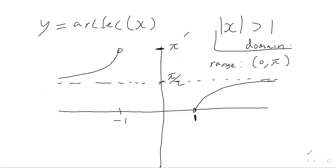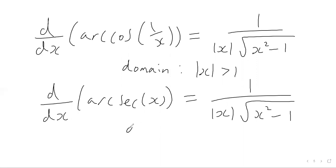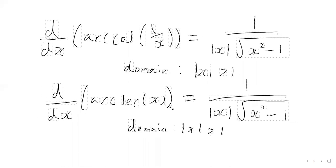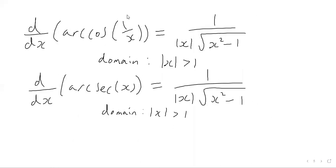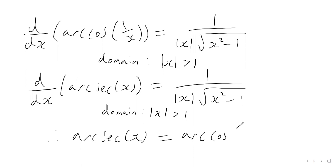The domain of the arcsec function is the same as the domain of arccos of 1 over x — both have modulus of x greater than 1. Since these two functions have the same derivative and are defined on the same domain, they must be the same function up to a constant. So arcsec of x equals arccos of 1 over x plus a constant. That constant is actually going to be 0, which we can verify by algebraic manipulation.